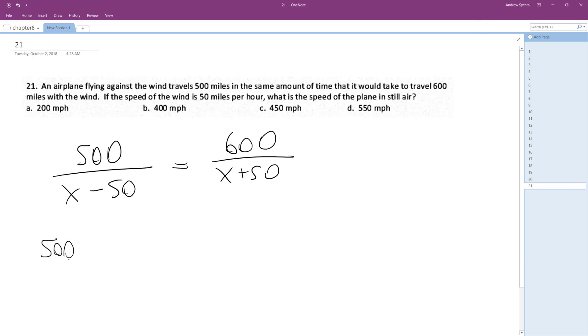So 500 times X plus 500 times 50, that's 25,000, is equal to 600X minus 30,000.